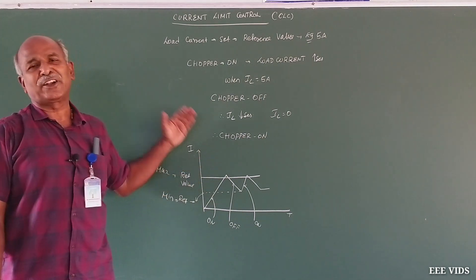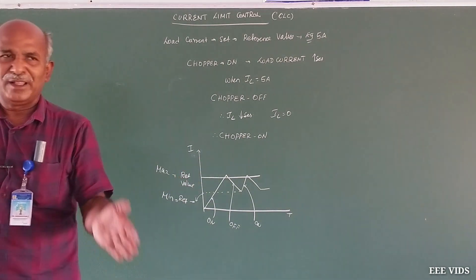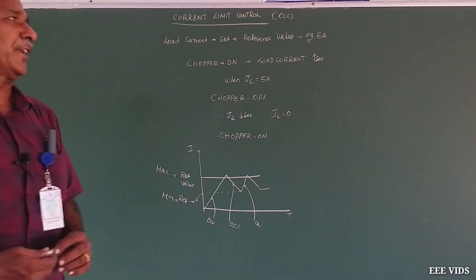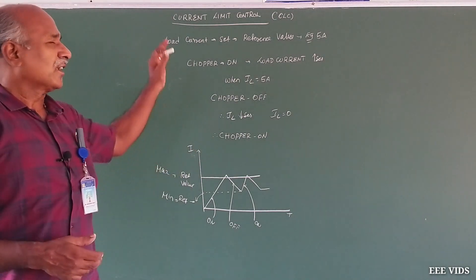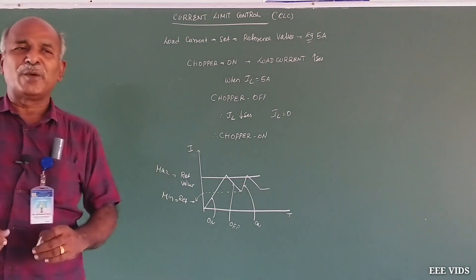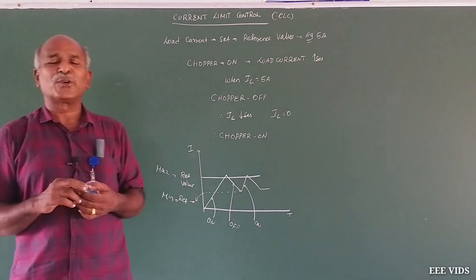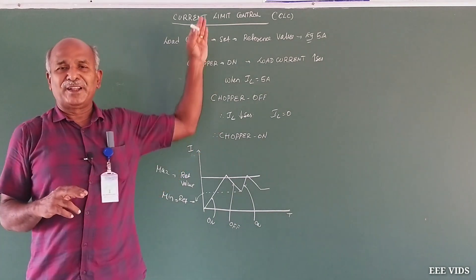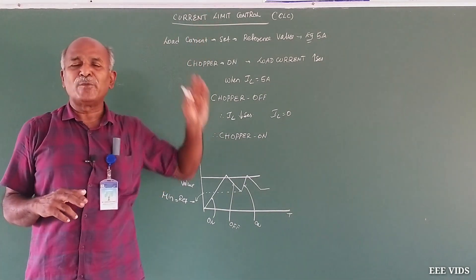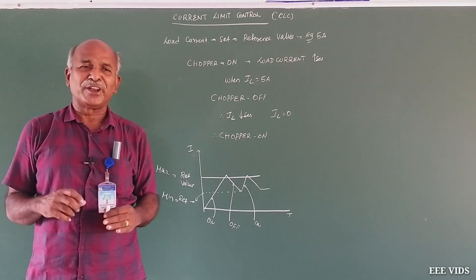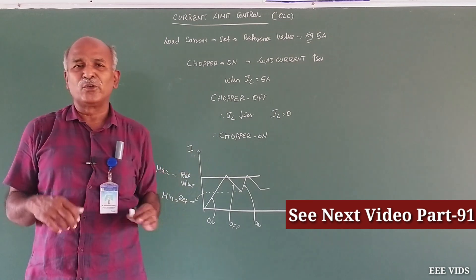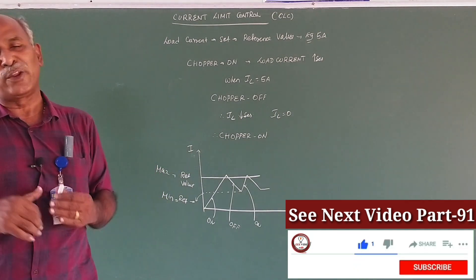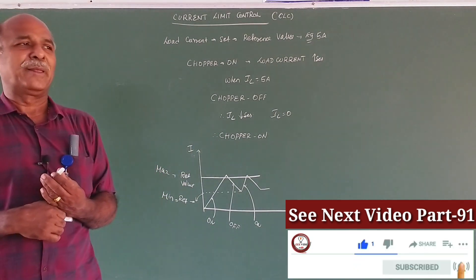This is the most important and most practically used circuit — current limit control. We use it in the fridge and AC. So there are two methods to do chopper on and off: one is based on on-time and off-time, and another is based on the load current relative to a reference — chopper on and off. That is current limit control.